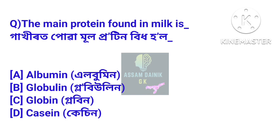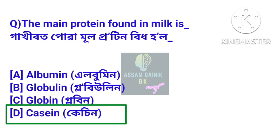Question 7: The main protein found in milk is — gakhirot pooha muul protein beet hol. Answer: Casein. Gakhirot casein na mor protein beet pradhan koi pooha chaye.